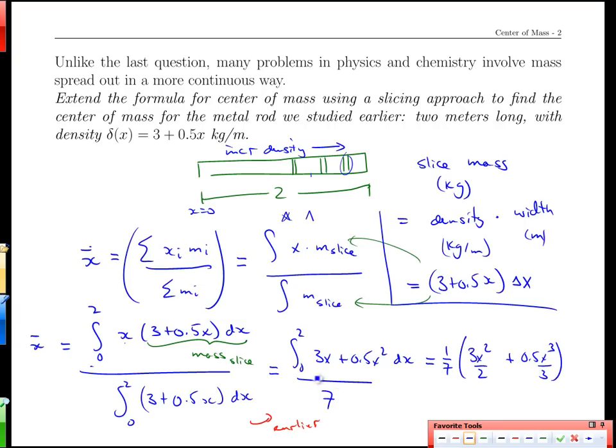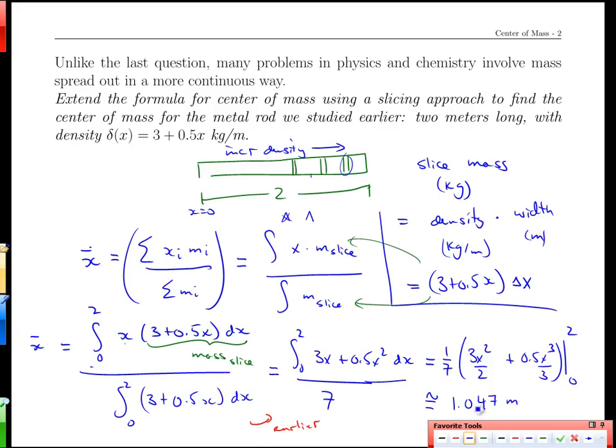All of that is over the 7th, so we have 1 7th multiplying all of that. And we're going to evaluate that at 2 and 0. And if we do the calculation with that, we're going to get approximately 1.047 meters. And as always, if we can, we try to do a little sanity checking on that.